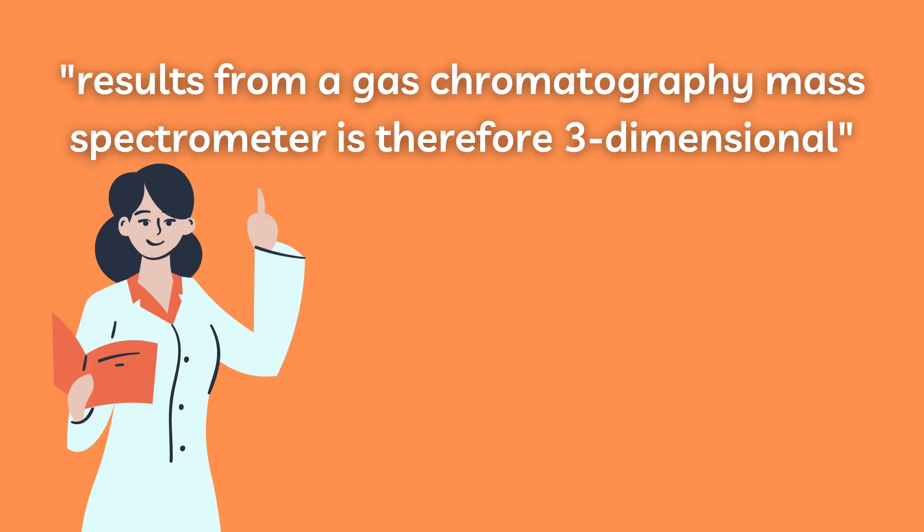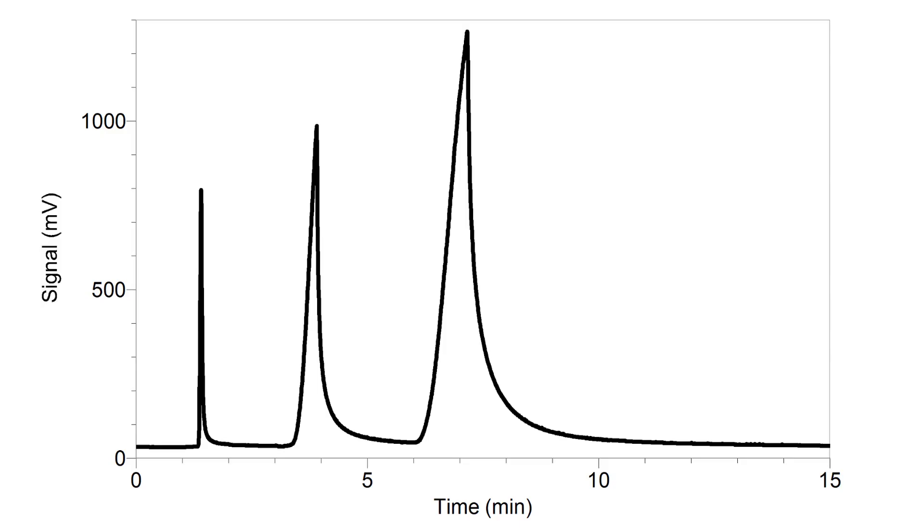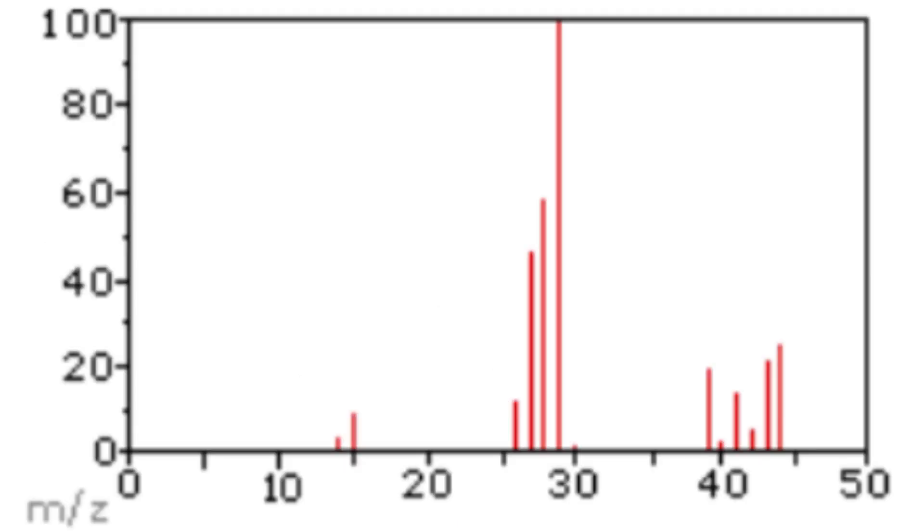The subsequent results from a gas chromatography mass spectrometer are hence three-dimensional, consisting of the gas chromatogram that can be used for qualitative and quantitative analysis, in addition to the mass spectra that can be used to identify unknown analytes and determine structural and chemical properties of molecules.